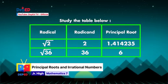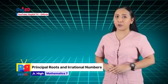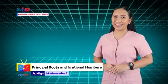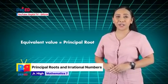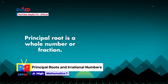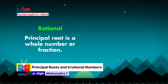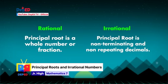As you have seen in the table, we have the radical and the radicand. When we get the answer of square root of 2 and square root of 36, that is called the principal root. Notice that some principal roots are whole numbers and others are decimals. When a principal root is a whole number or fraction, then the radical is rational. And when a principal root has non-terminating and non-repeating decimals, these numbers are called irrational numbers — it means that they cannot be expressed as fractions.